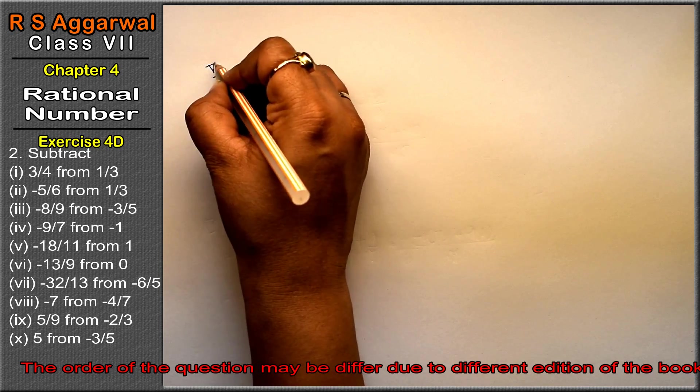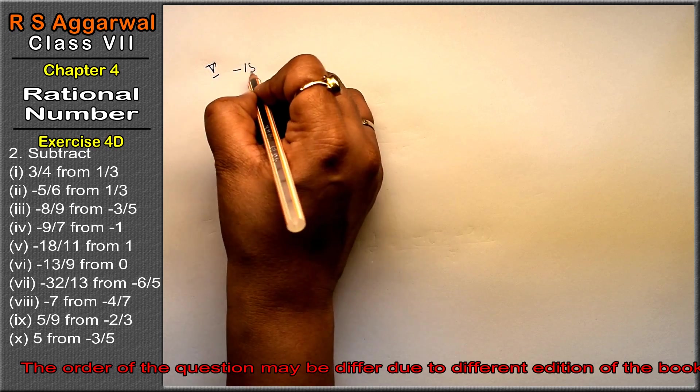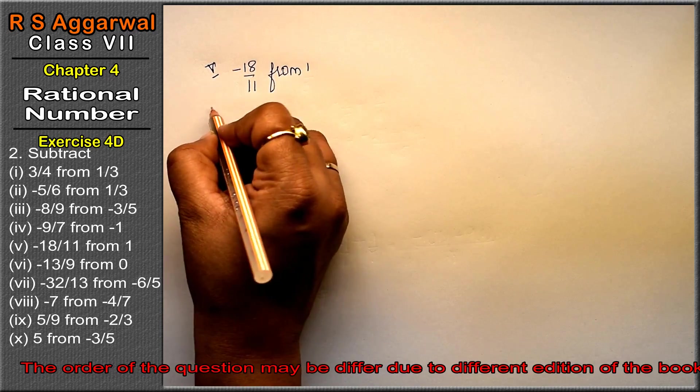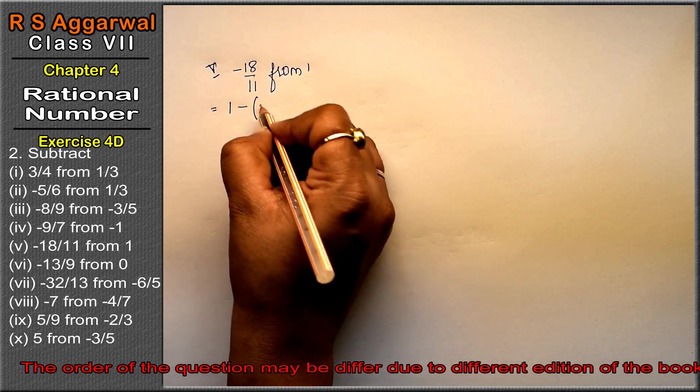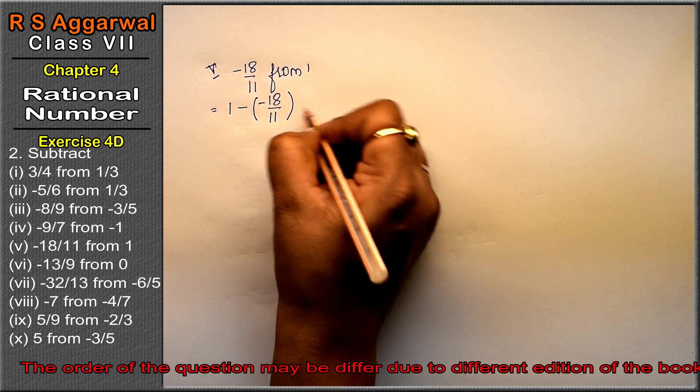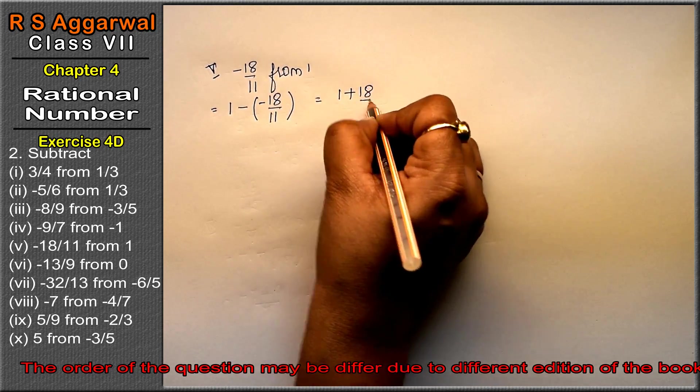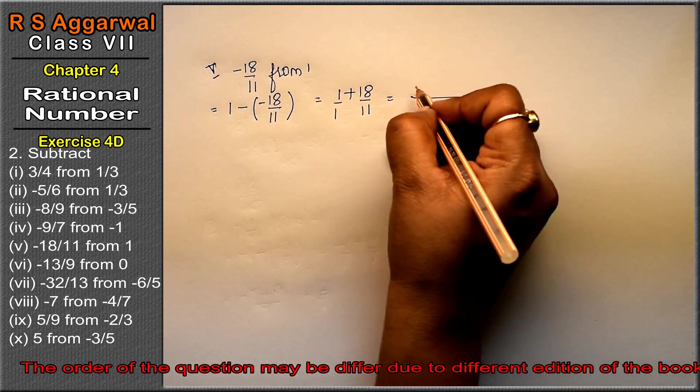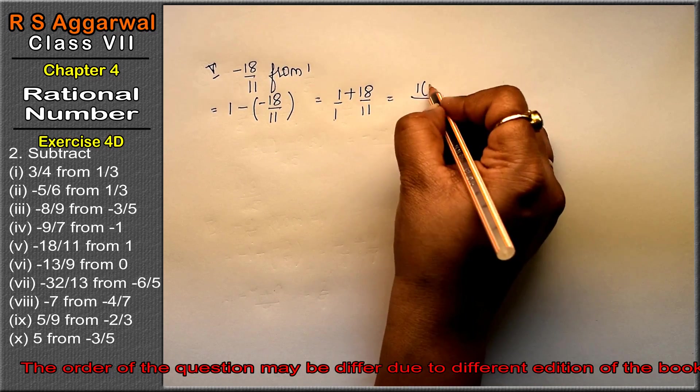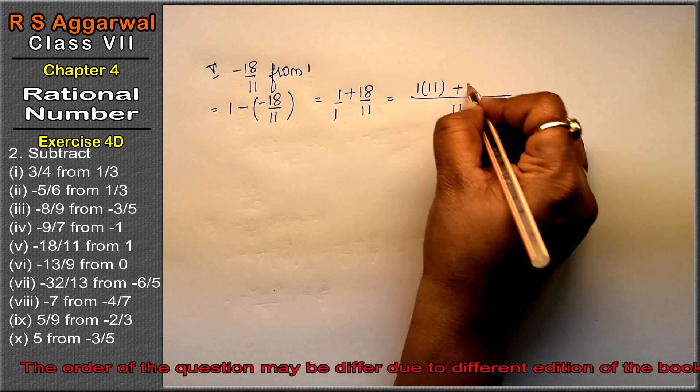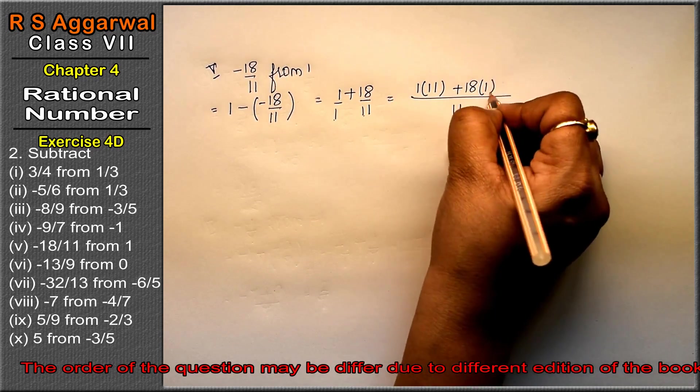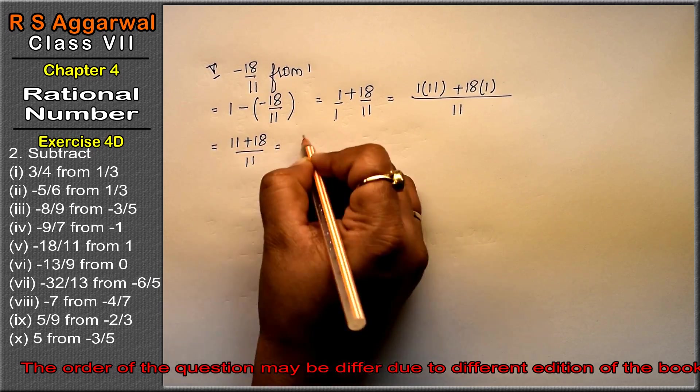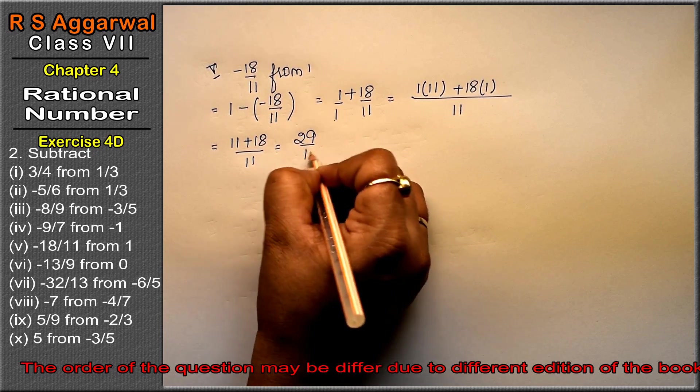Fifth part: minus 18 upon 11 from 1. Subtract: 1 minus minus 18 upon 11. So 1 plus 18 upon 11 equals 29 upon 11 is the answer.